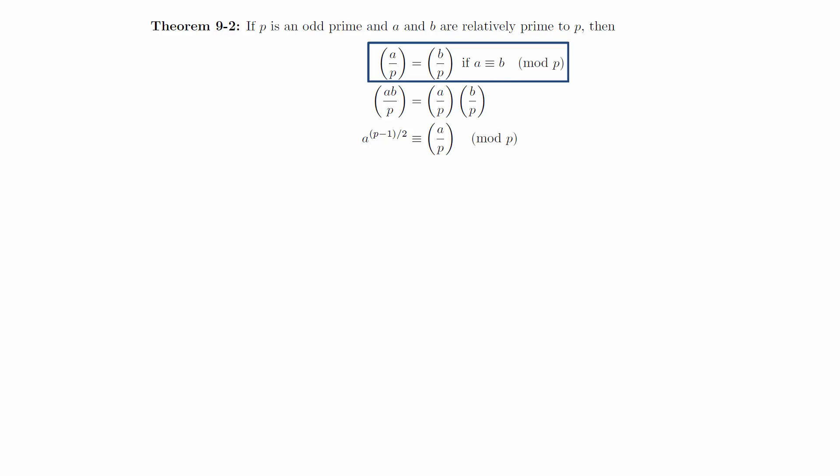The first equation is true just by the definitions and the basic arithmetic facts about congruences. When working modulo p, we can freely replace one symbol with another that is equivalent to it modulo p.